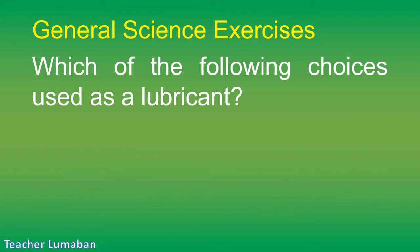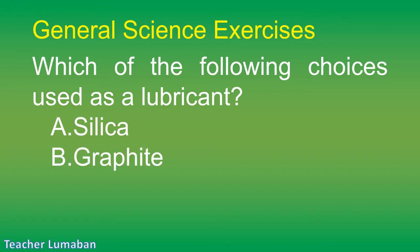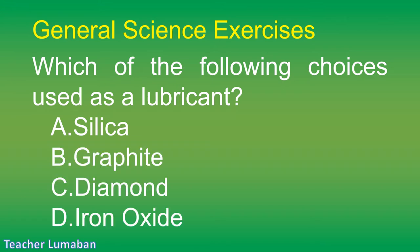Which of the following choices is used as a lubricant? Letter A: silica. Letter B: graphite. Letter C: diamond. Letter D: iron oxide.